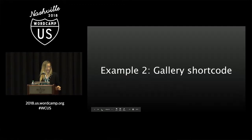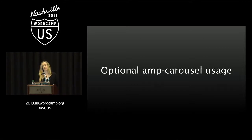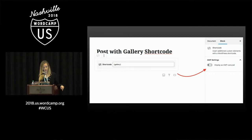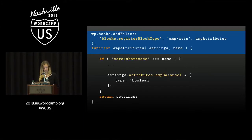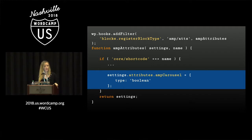The next example is based on gallery shortcode. There is no specific block for gallery shortcode, but there is a shortcode block where you can use gallery shortcode. What we wanted was to allow the user to use amp-carousel instead of the default WordPress gallery, displaying a carousel instead. We'd add just one toggle so the user can choose if they want the carousel. The first thing again is to register settings using the same blocks.registerBlockType filter. We check if this is a shortcode block, add the amp-carousel toggle as a boolean, then return the settings.